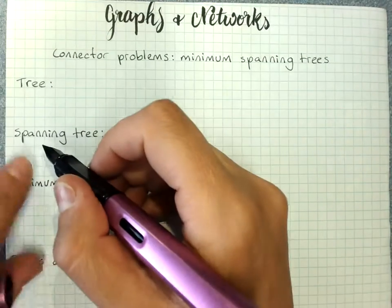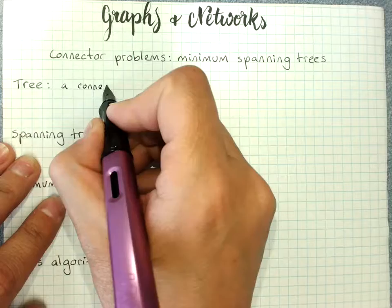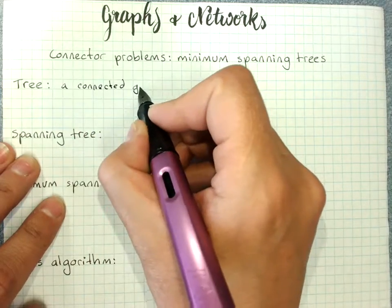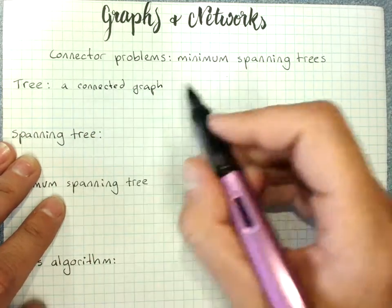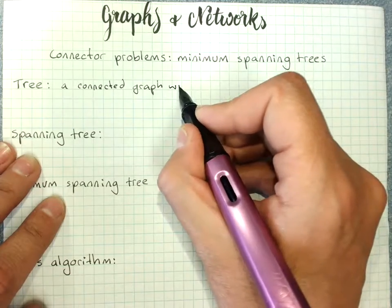A tree is a connected graph with no cycles or multiple edges or loops. So it's a really boring connected graph.